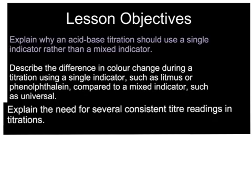These are single indicators rather than mixed indicators like universal. So for single indicators we're talking about litmus which has two colours, red and blue, or phenolphthalein which has two colours, colourless or pink, rather than universal which has got a whole range of colours and it's difficult to see the end point.